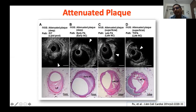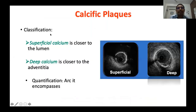IVUS doesn't have the resolution to confirm thin-cap fibroatheroma directly — it is indirectly evidenced by attenuation closer to the lumen. Fibrocalcific plaque is classified based on location: superficial calcium is closer to the lumen, and deeper calcium is closer to the adventitia. Calcium extent is quantified by measuring the arc it encompasses in degrees — for example, this calcium encompasses 200 degrees along the circumference.